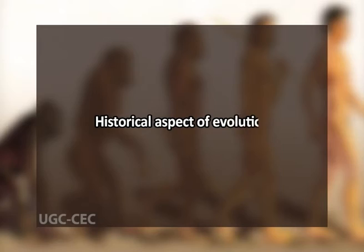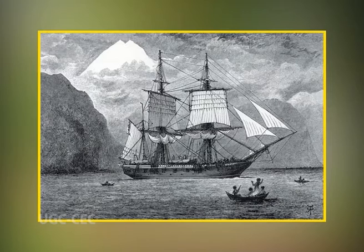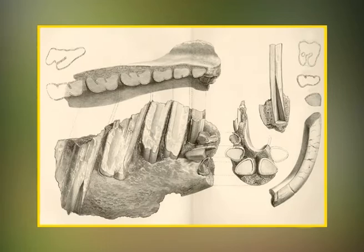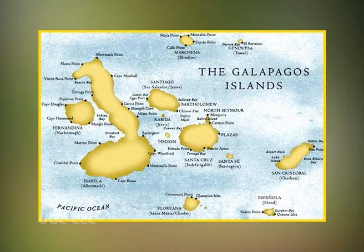In 1831, Darwin sailed around the world in HMS Beagle, a ship from England. He observed many organisms and saw that they were very well suited to their environments. He was impressed by the ways in which they survived and produced offspring. He wondered why different species lived and did not live in similar biomes. He collected fossils and some were unlike any creatures he had ever seen, and he wondered why those species had disappeared.